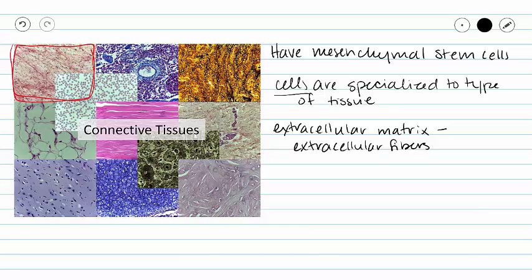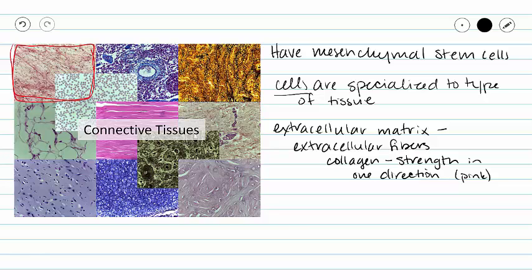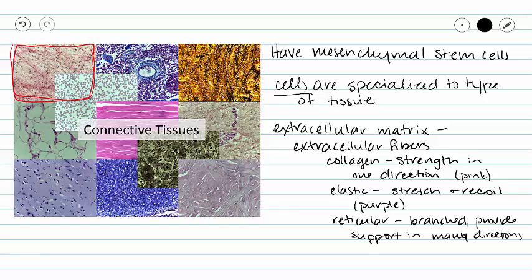We have three different extracellular fibers: collagen, elastic fibers, and reticular fibers. Collagen fibers are going to provide support in one direction and generally they stain pink. Elastic fibers are going to allow our tissue to stretch and recoil, and elastic fibers very often stain purple. Finally, reticular fibers are going to be branched and they provide a supportive network in many directions.